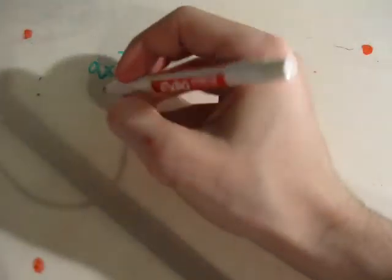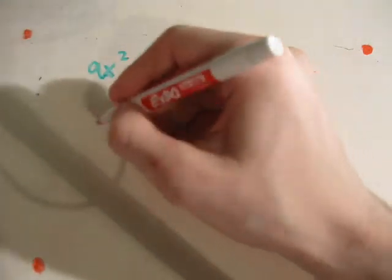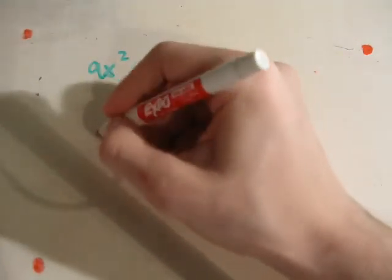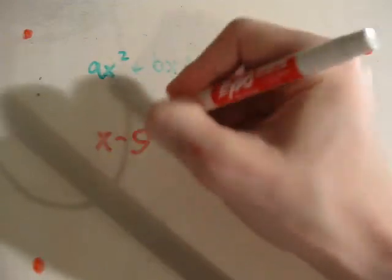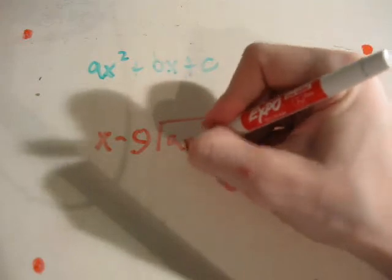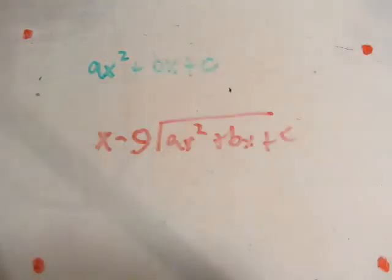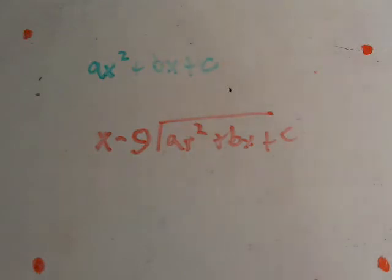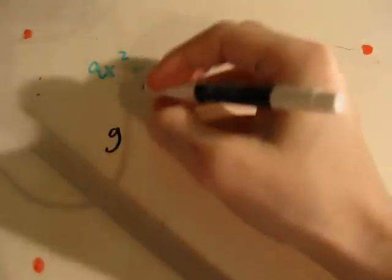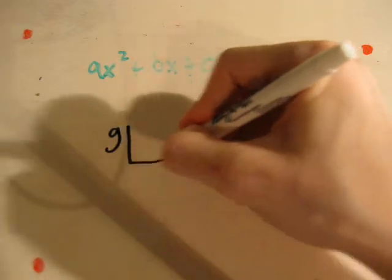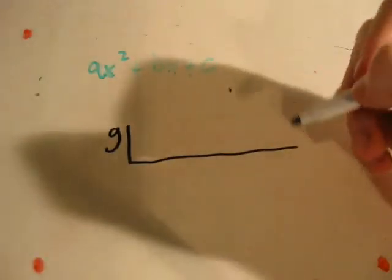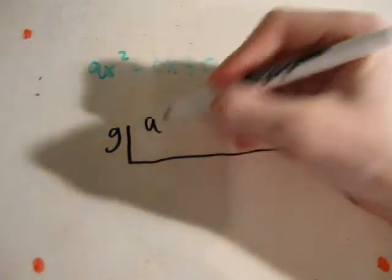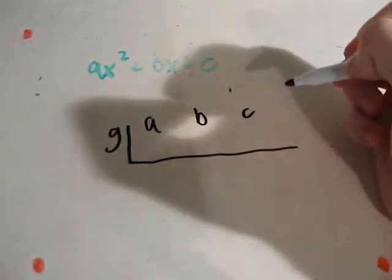Now, since synthetic division, instead of going the whole route of taking a proposed factor of x minus g and putting it through the ax squared plus bx plus c problem, this time we're actually going to put it through a shortened version which will actually make it quicker to solve. And it just uses the coefficients. So it can be g, and then to set up the synthetic division we make a line similar to the long division line, but instead we put our a, our b, and our c on the line.